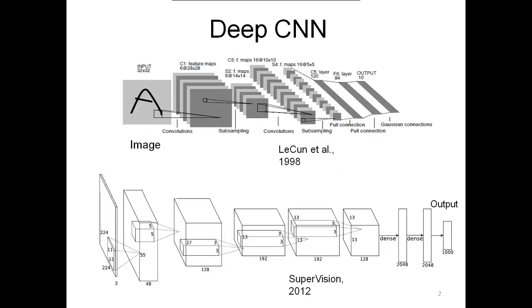Nowadays deep learning architectures are widely used in many practical applications. Most often they are used for visual recognition problems — to classify objects like pictures or video and recognize them. Most often, so-called convolutional neural networks are used for this purpose. A general architecture of such a network is presented at this slide. It was first proposed by LeCun in 1998, and since that time a number of different architectures and training algorithms have been developed for these networks.